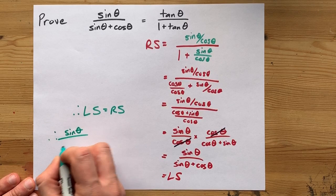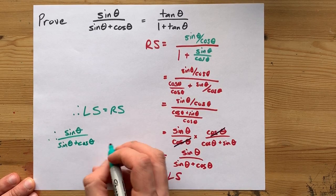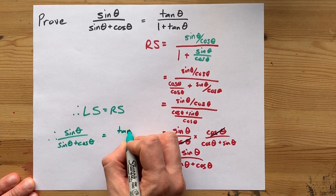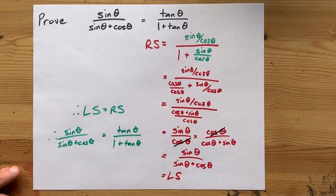Therefore, the sine of an angle divided by sine plus cos of that angle is the same as tan divided by 1 plus tan for that angle.